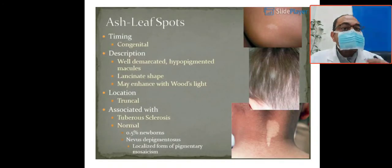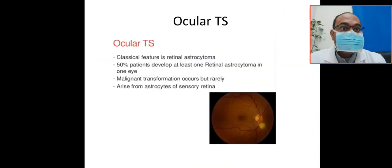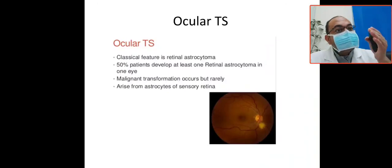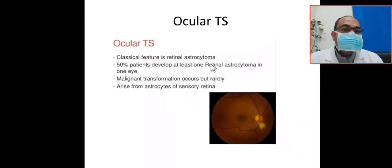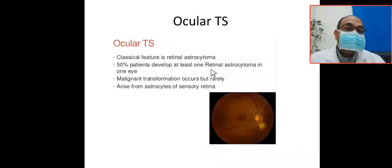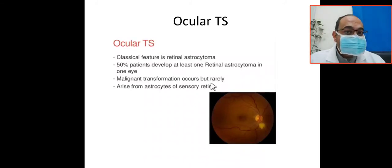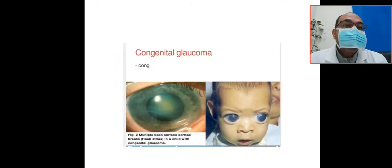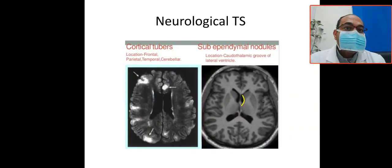The ocular association includes retinal astrocytomas. Approximately 50% of cases will develop at least one retinal astrocytoma in one eye. Malignant transformation can occur but is very rare.